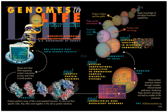Systems biology can be considered from a number of different aspects. As a field of study, particularly the study of the interactions between the components of biological systems, and how these interactions give rise to the function and behavior of that system — for example, the enzymes and metabolites in a metabolic pathway or the heartbeat — as a paradigm, usually defined in antithesis to the so-called reductionist paradigm of biological organization, although fully consistent with the scientific method.